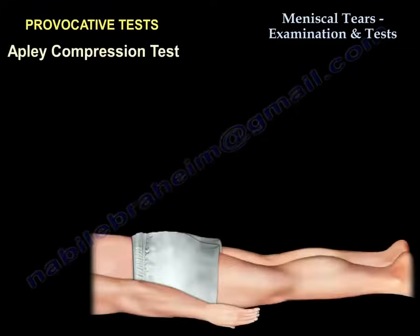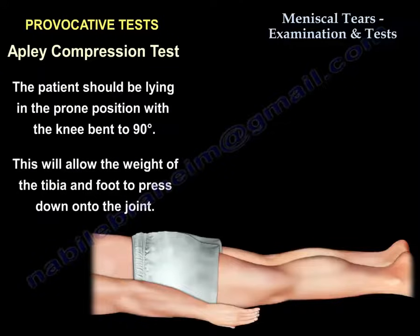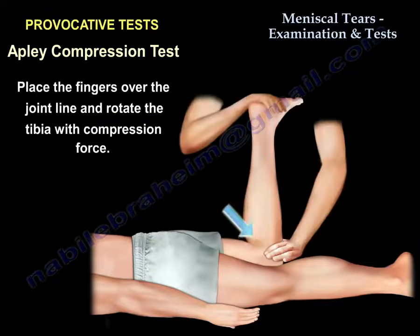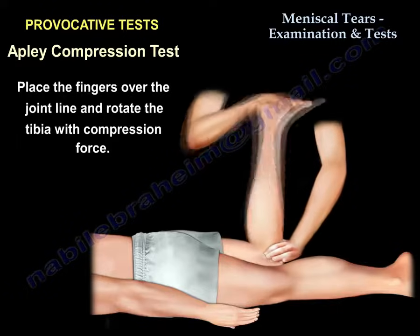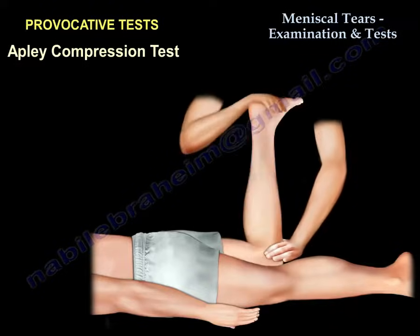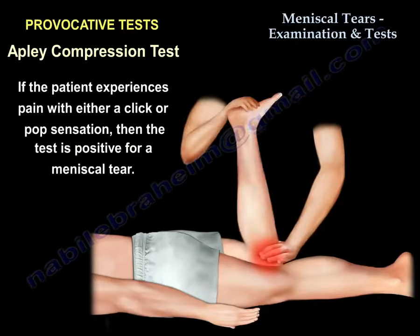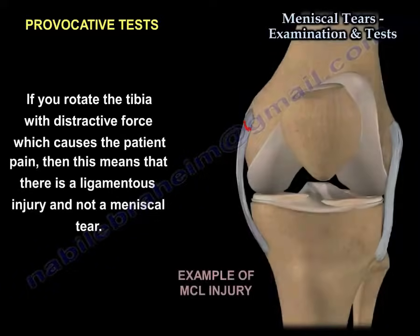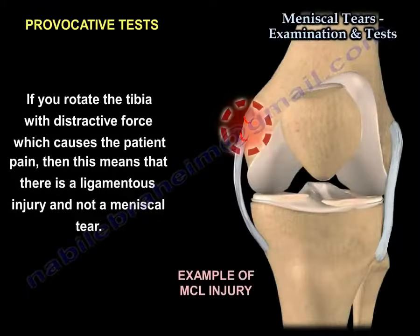The second test is the Apley compression test. The patient is prone, bending the knee to 90 degrees. This allows the weight of the tibia and the foot to press down on the joint. You put your fingers over the joint line and rotate the tibia with a compression force. If the patient experiences pain with a click or a pop, the test is positive for meniscal tear. The test is called the Apley compression test because you need to apply compression. If you rotate the tibia with a distraction force and the patient experiences pain, then it is a ligamentous injury and not a meniscal tear.